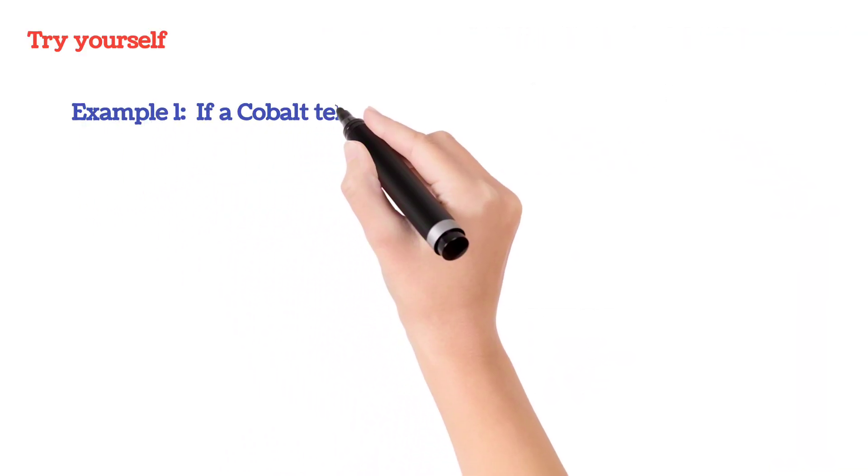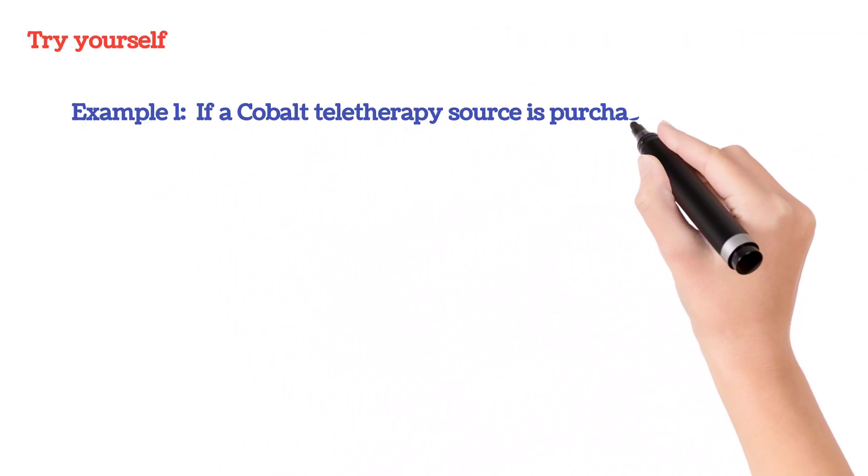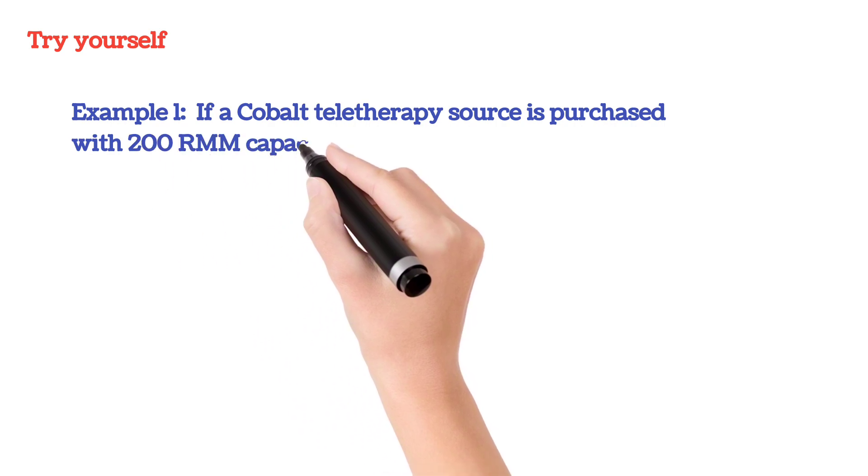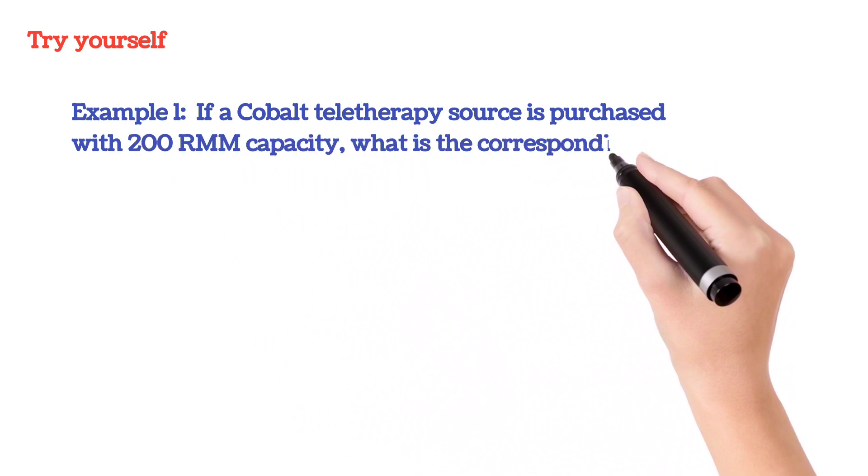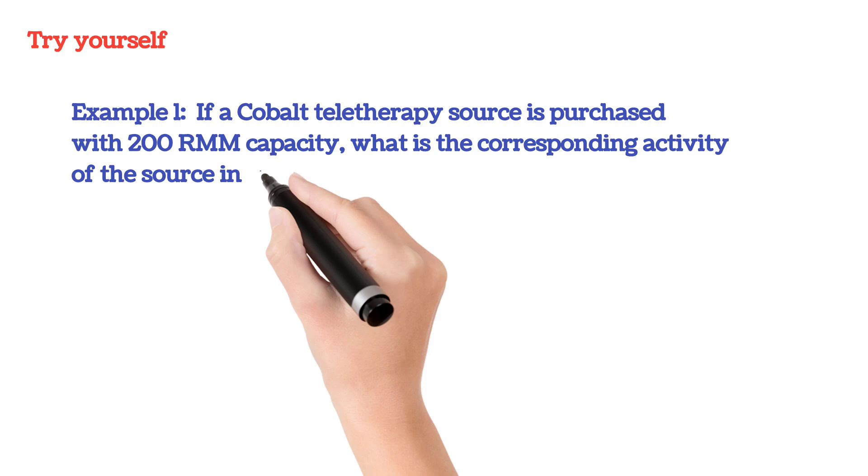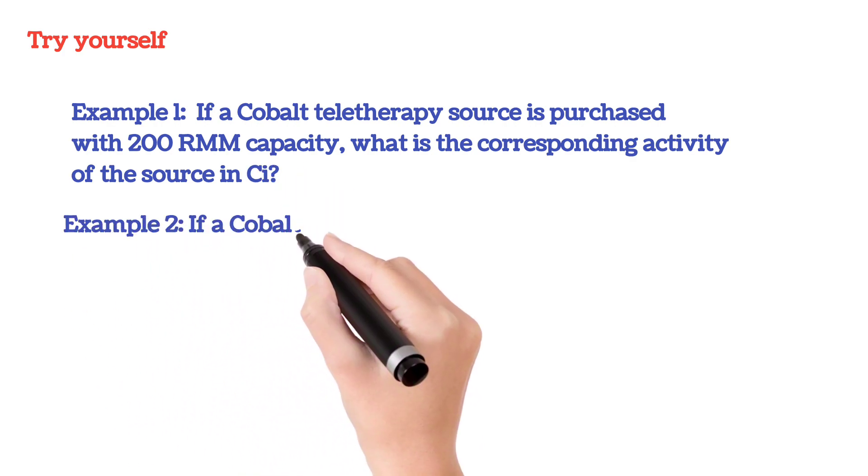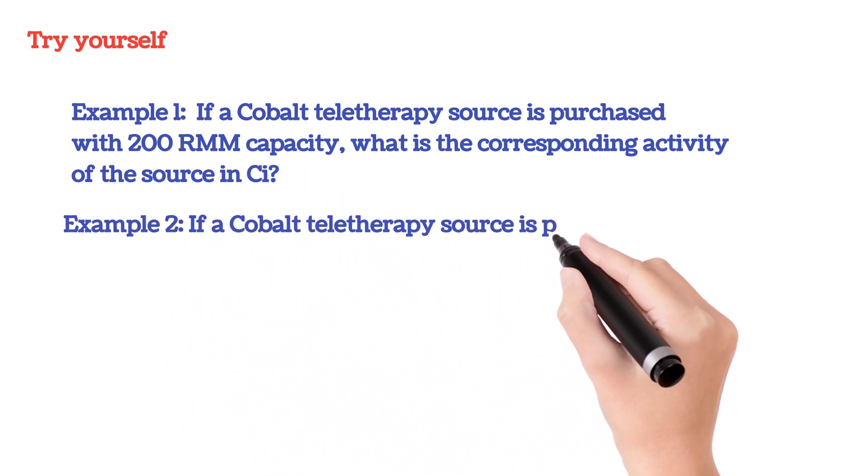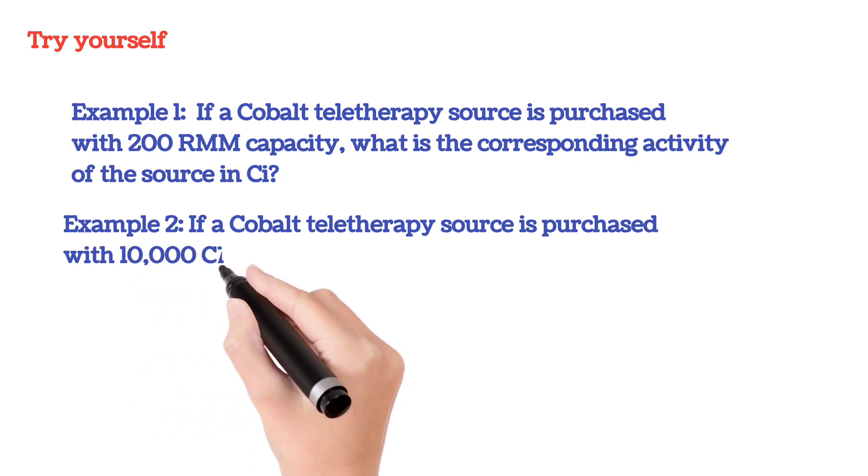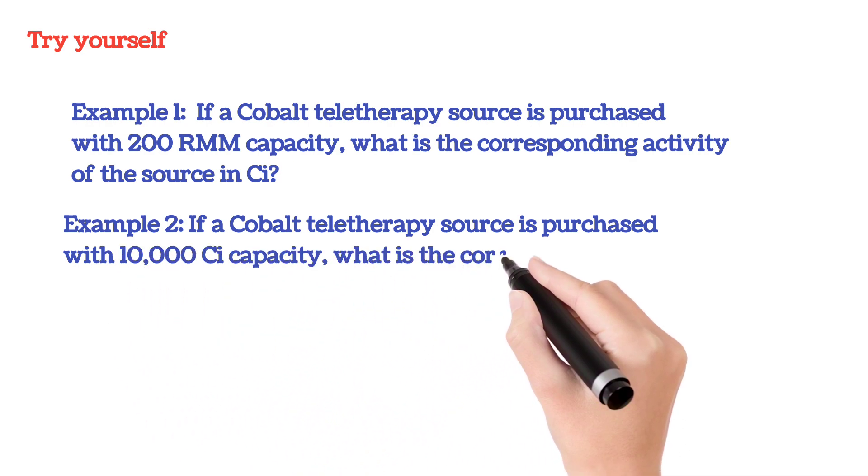Example 1: If a cobalt teletherapy source is purchased with 200 RMM capacity, what is the corresponding activity of the source in curie? Example 2: If a cobalt teletherapy source is purchased with 10,000 curie capacity, what is the corresponding RMM value?